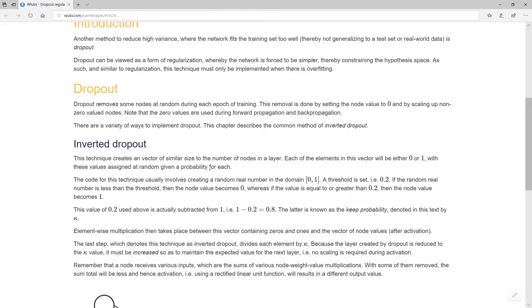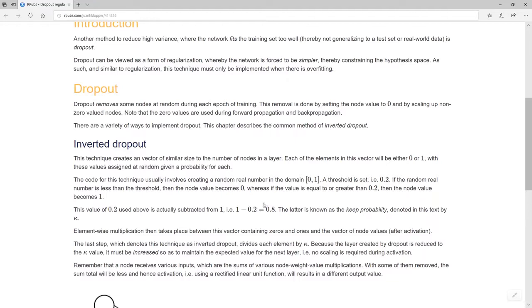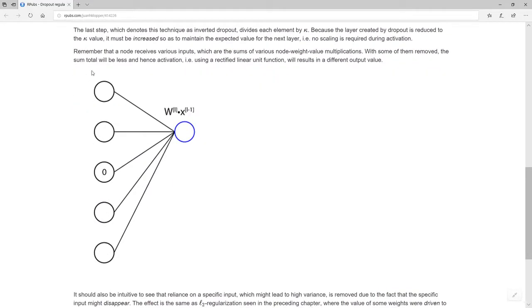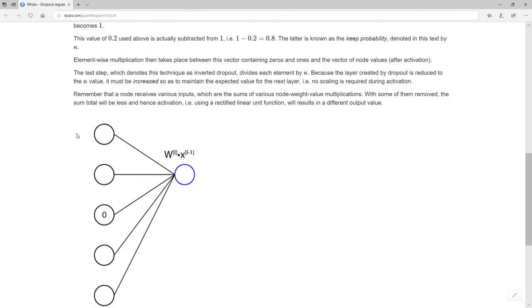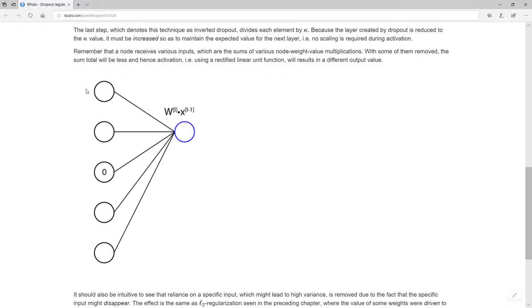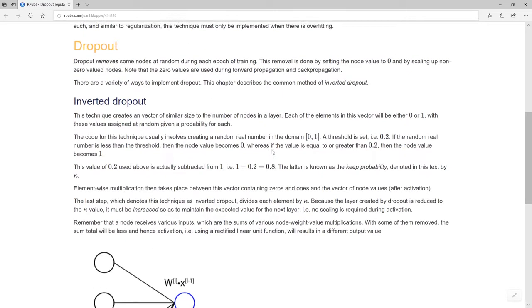How it actually works is, well there are different ways, but the normal is just to use what is called inverted dropout. Inverted dropout looks at a layer and a layer contains a number of nodes. Some of them are going to be chosen to be zero. How does that work? We create a vector of the similar number of elements. Here we have one, two, three, four, five. So we would create a vector of five elements, and each of them will receive a random value in this domain from zero to one inclusive.